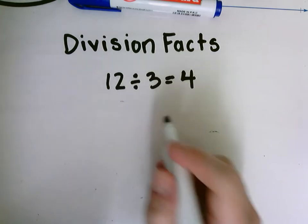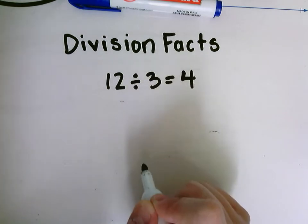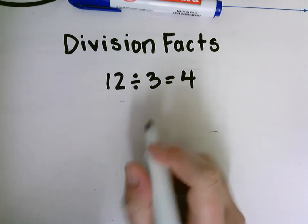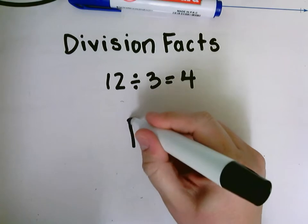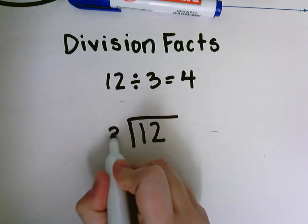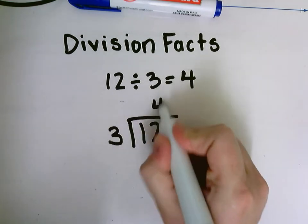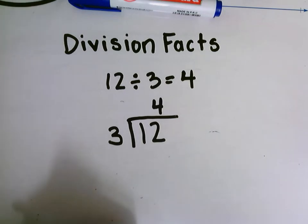But most of the time this year we're going to be using our division box symbol or a long division symbol. And how I would write the problem that way is 12 divided by 3 equals 4.